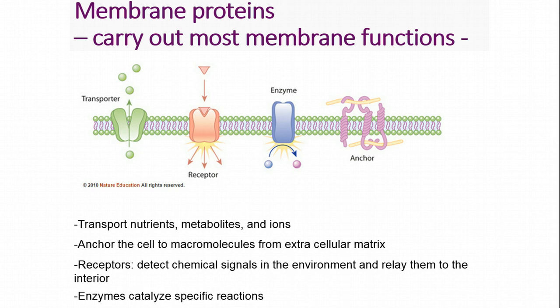Some of these functions are the transport of nutrients from one side of the membrane to the other. Some are receptors for cell signals — if you have a signal from outside the cell, it can bind to this protein, and that signal can be transduced to inside the cell. Some membrane proteins are enzymes that catalyze the reaction of a substrate into a product. And some membrane proteins are anchors — they bind to something outside the cell and to the cytoskeleton inside the cell, helping hold the cell in place.